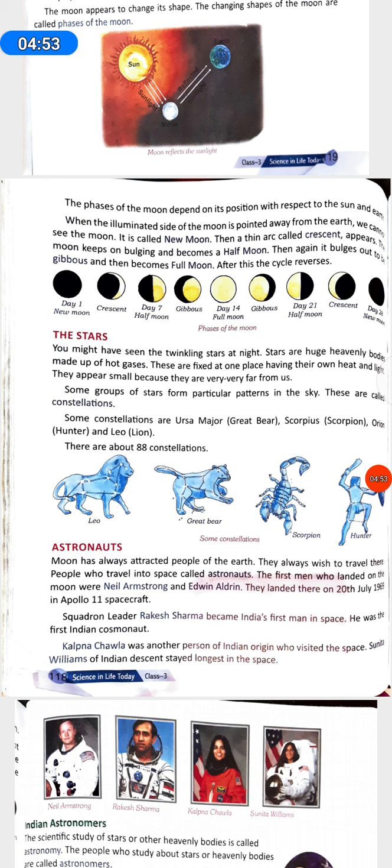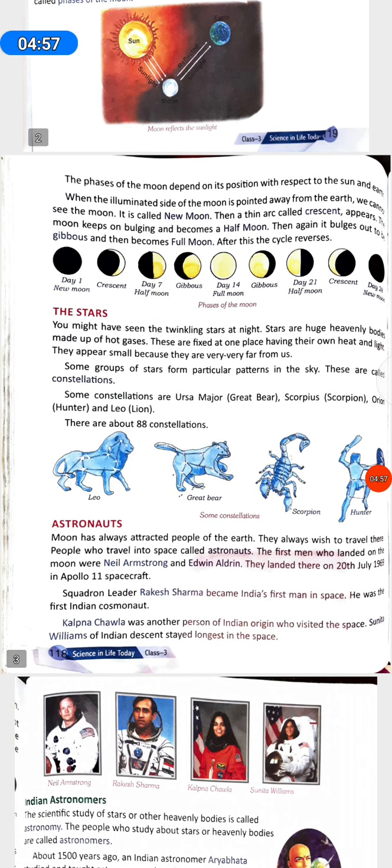The Stars. You might have seen the twinkling stars at night. Stars are huge heavenly bodies made up of hot gases. These are fixed at one place having their own heat and light. They appear too small because they are very far from us. Some groups of stars form particular patterns in the sky. These are called constellations. Some constellations are Ursa Major or Great Bear, Scorpius or Scorpion, Orion or Hunter, and Leo. There are about 88 constellations.